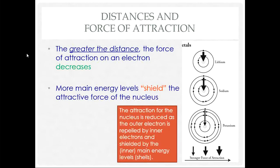Think about what happens as you add more energy levels. Each energy level contains its electrons: the first has two, the second has eight, the third has eight, and so on. As you have more energy levels and more inner core electrons, they shield the attractive force the nucleus has on its valence electrons. So the more energy levels an atom has, the more shields there are and the weaker the attractive force.